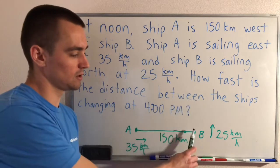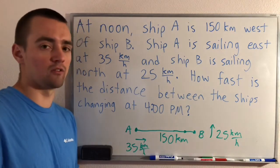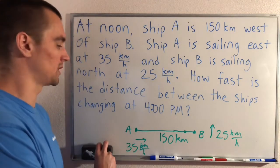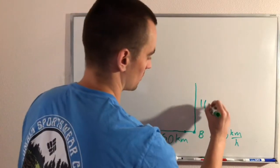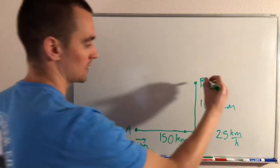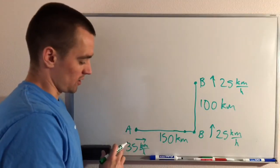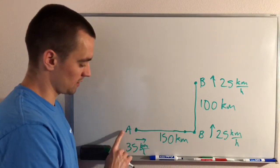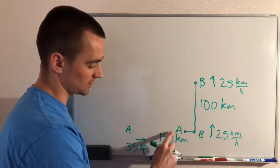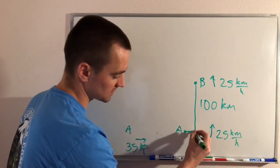At the same time, ship B is also moving north at 25 kilometers per hour. So four hours from now, it's going to go 100 kilometers. At four o'clock PM, ship B is right about here — it will have gone 100 kilometers — and ship A is now right here, only 10 kilometers away from ship B's starting point.